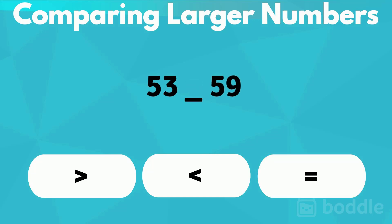Fifty-three and fifty-nine. Both numbers have five tens. However, fifty-three has three ones and fifty-nine has nine ones. Since fifty-three has less ones, it is less than fifty-nine.